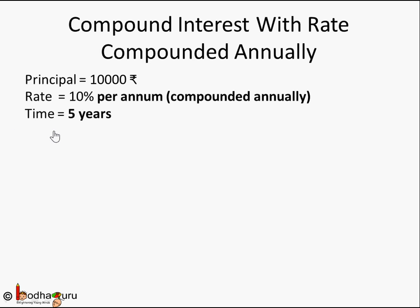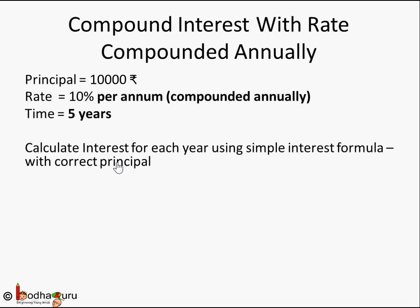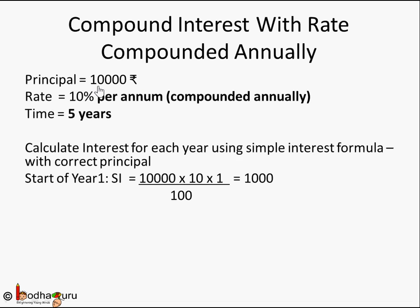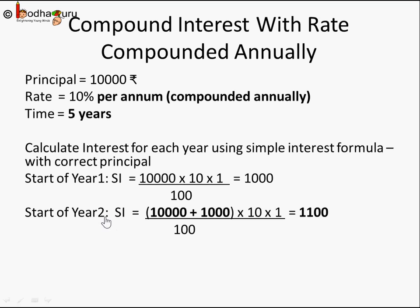Let's say the time is 5 years. For the first year, the principal is 10,000 and the rate is 10%, giving simple interest of 1,000 rupees. At the end of year one, this 1,000 is added to the principal. So the principal for year two becomes 11,000, and the simple interest for year two is 1,100 rupees.